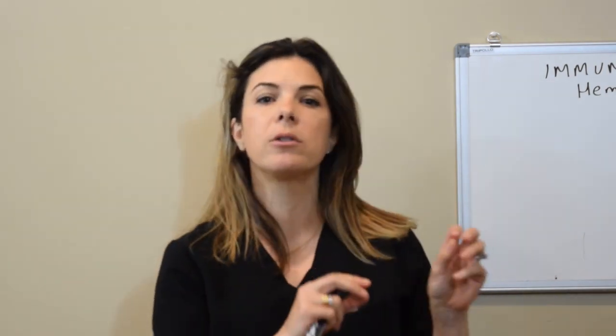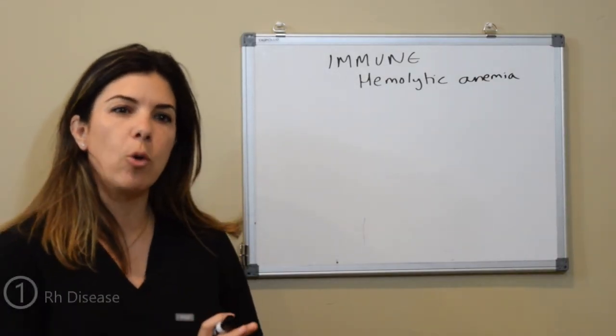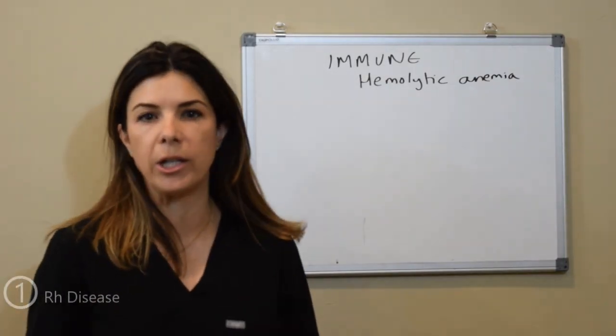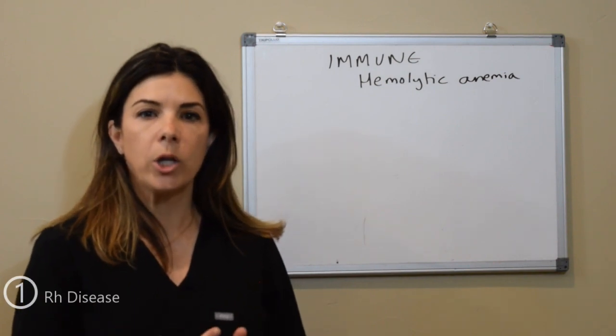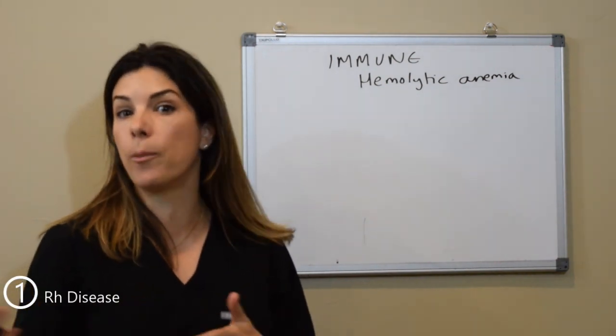A lot of people have issues understanding this and understanding why we care so much about certain maternal blood types. After this video you're going to realize why some blood types are more concerning than others. So today let's start by talking about Rh disease, or rhesus disease, which can be very concerning for the baby — leading to anemia as well as hyperbilirubinemia.